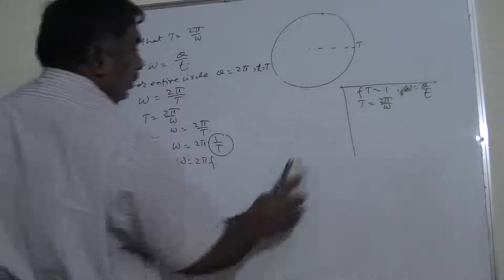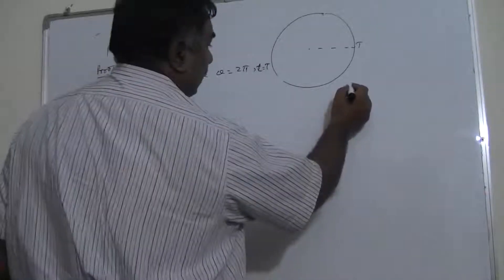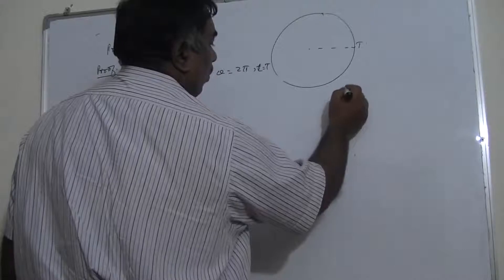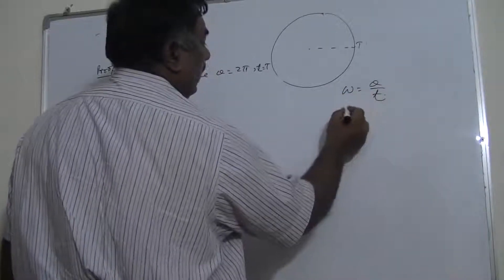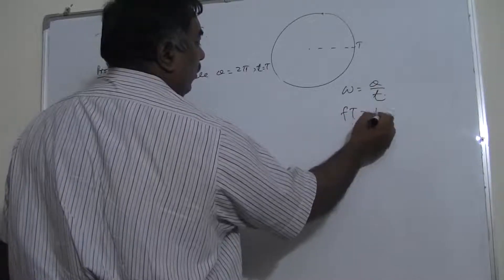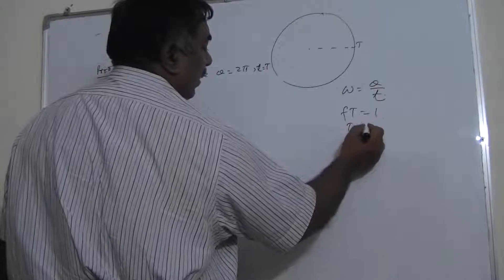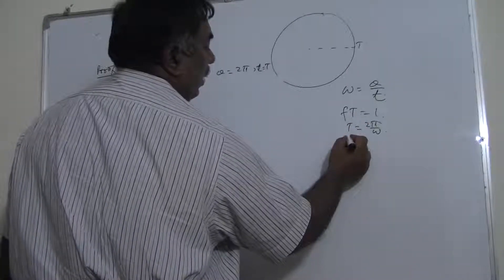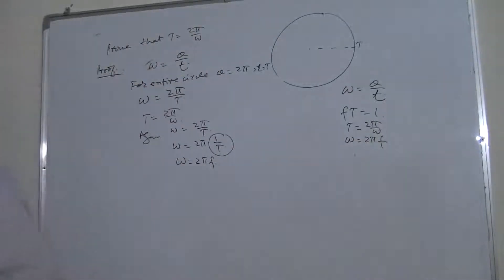So the key relationships to remember are: omega equals θ/t; fT equals 1, where f is frequency and T is time period; T equals 2π/ω; and omega equals 2πf. These general formulas will be used throughout A2 level.